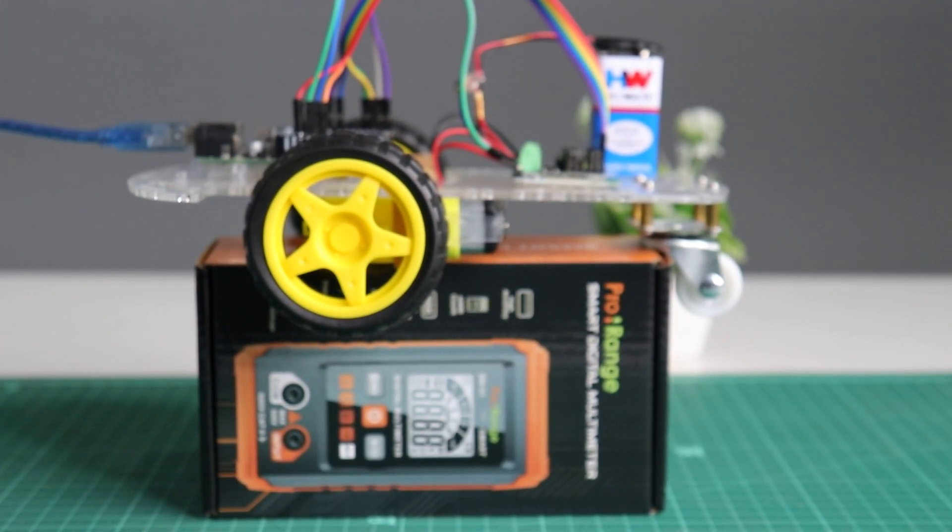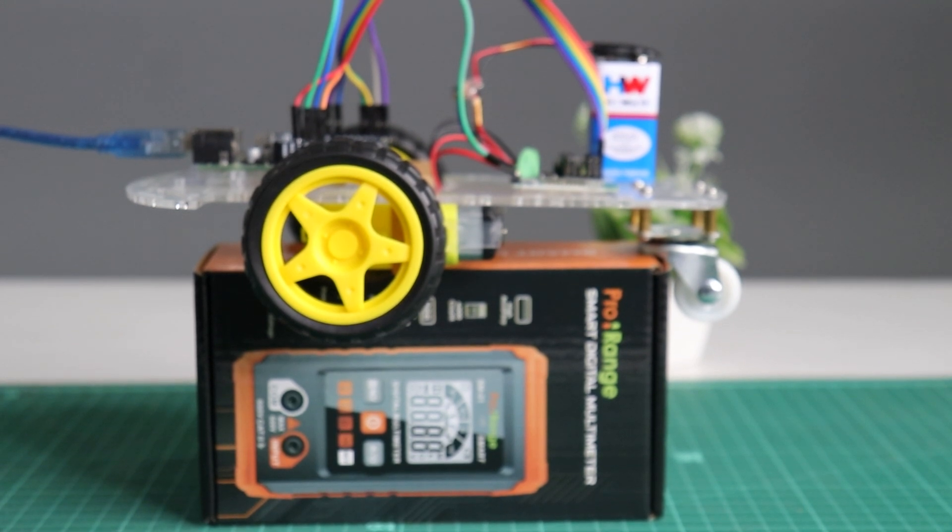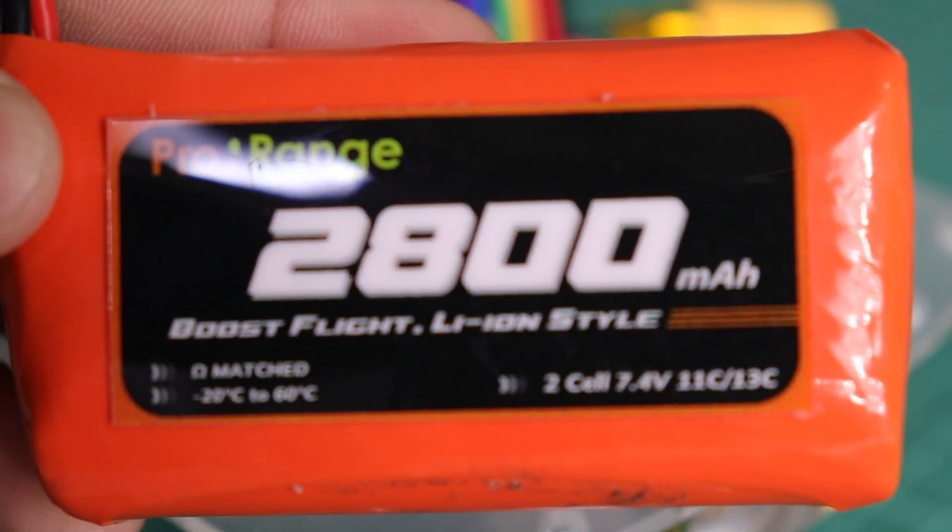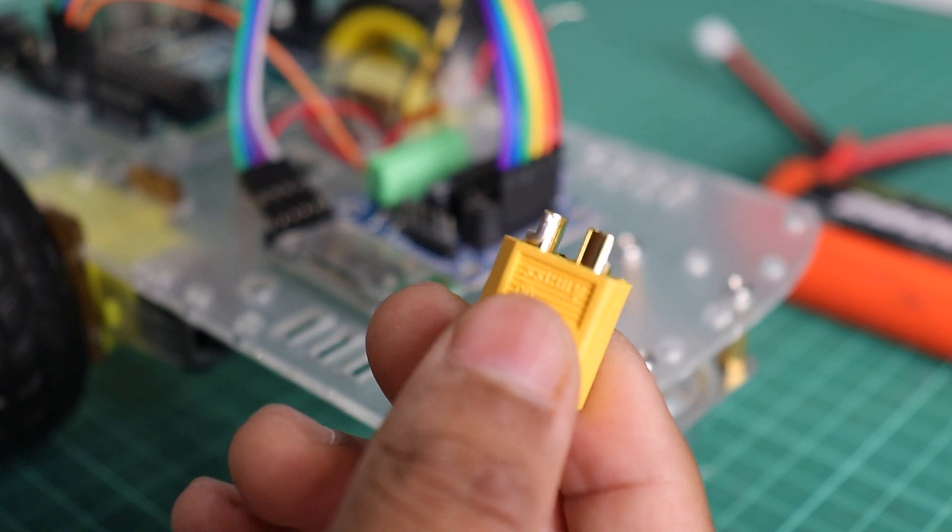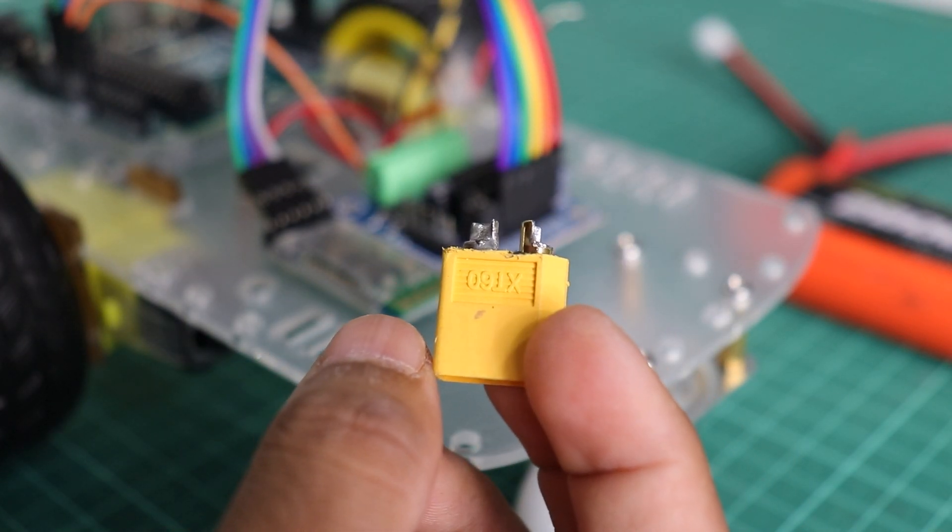Power from the small battery is not enough to power the motors and Arduino board for a long time. So use this pro range lithium-ion battery. To do that, attach the XT connector in replacement of 9 volt battery connector as shown.